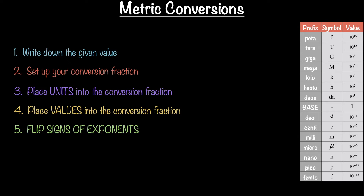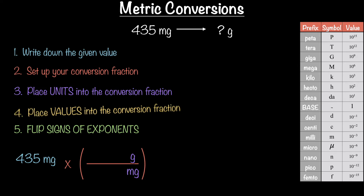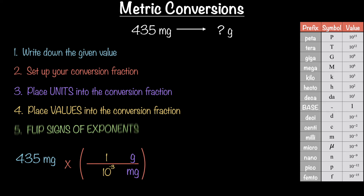One last example, and then you're completely set to crush any metric conversion. Let's convert 435 milligrams into grams. Step one: write down the given value. Step two: set up your conversion fraction. Step three: place milligrams on the bottom and grams on the top. Step four: place values into the conversion fraction. Remember, gram is a base unit — it has no prefix.